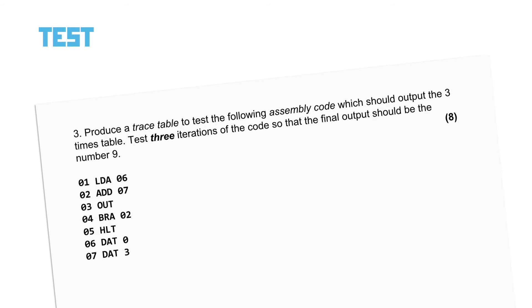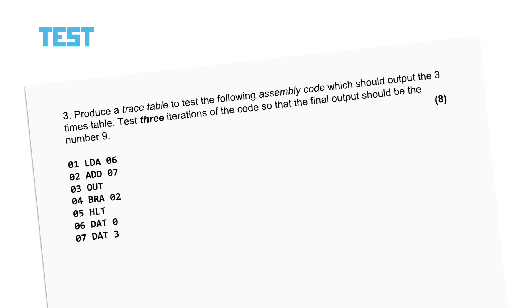The other skill — being able to test assembly code — can only really be assessed by asking you to work through a trace table for the code execution. This is a massive amount of effort, and even a small program leads to a huge table, so a question like this would have to be crafted with care to make sure it isn't overwhelming in an exam situation. Here's one I've knocked up — it asks you to produce a trace table for a program that outputs the three times table.